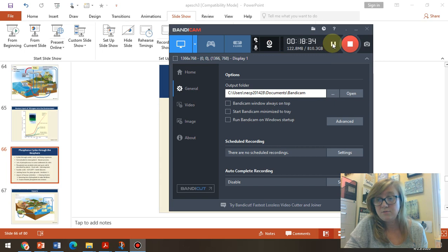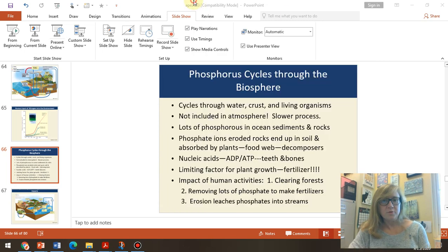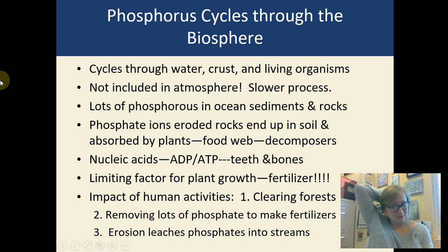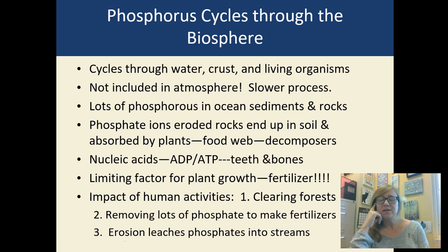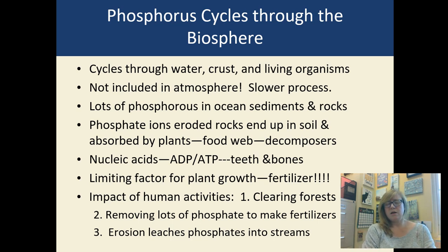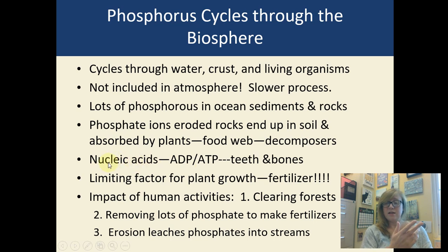Now let's talk about phosphorus and sulfur. The phosphorus cycle is unique — it cycles through water, the crust, and living things, but it's not included in our atmosphere. This makes it a slower process because it's tied to the rock cycle. There's lots of phosphorus in ocean sediments and rocks. You need phosphorus — it's in your DNA, your nucleic acids, RNA, and energy source ATP (adenosine triphosphate).